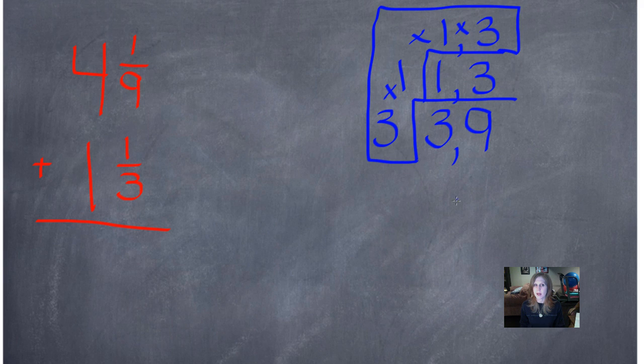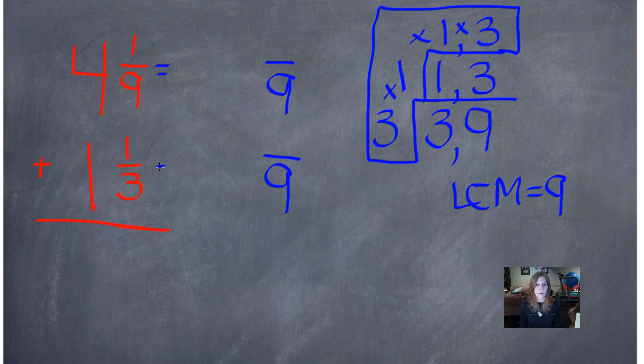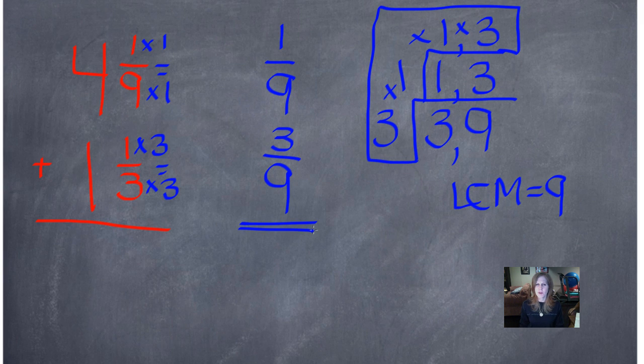3 times 3 is 9. My LCM equals 9. So, that's my new common denominator. So, I'm not going to write my whole number in there quite yet because I'm looking at my fraction parts right now. I'm asking myself, what do I do to 9 to get 9 times 1? What do I do to 1? I multiply it by 1 just like the denominator. 1 times 1 is 1. What do I do to 3 to get 9 times 3? So, 1 times 3 is 3.